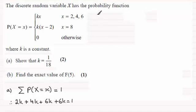So it's just a question of totaling that up. And if you total it up, you're going to end up with 18k. 18k which equals 1, and therefore k must be equal to 1/18, which is what we had to show.